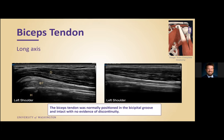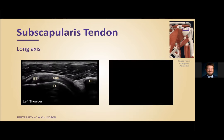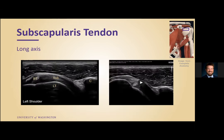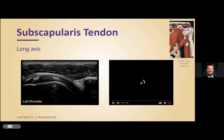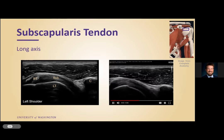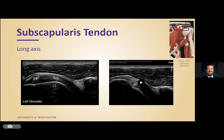We then looked at the biceps tendon in long axis — this was a normal biceps tendon with no surrounding fluid or thickening. So starting our report: the biceps tendon was normally positioned in the bicipital groove and intact with no evidence of discontinuity. We then moved immediately to the subscapularis, looking at it starting in long axis. Here we have the subscap inserting on the lesser tubercle, above our biceps tendon laterally, and the coracoid medially.